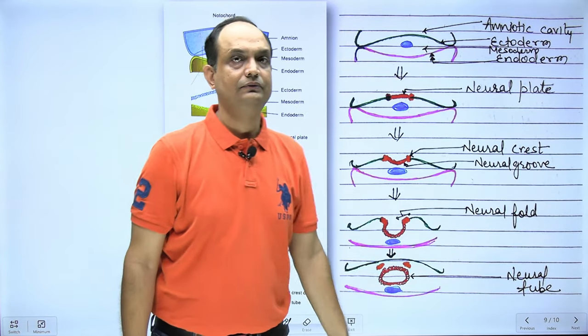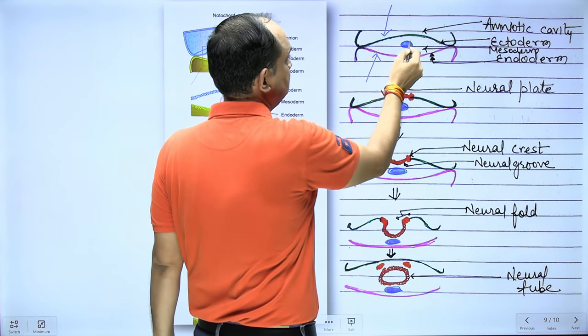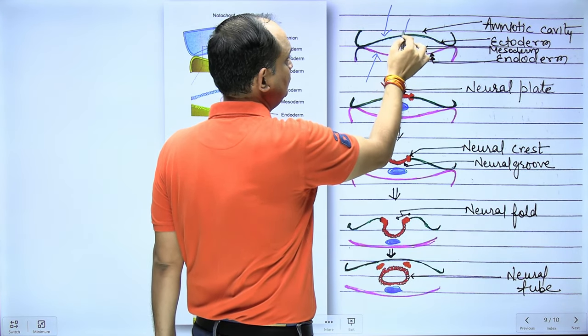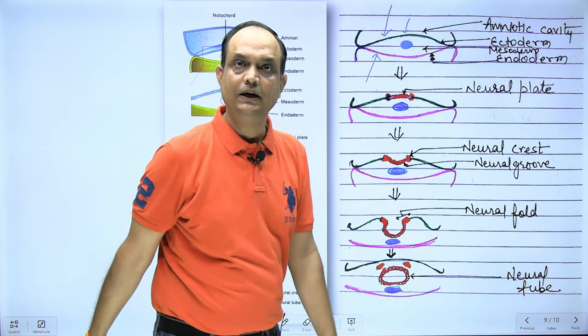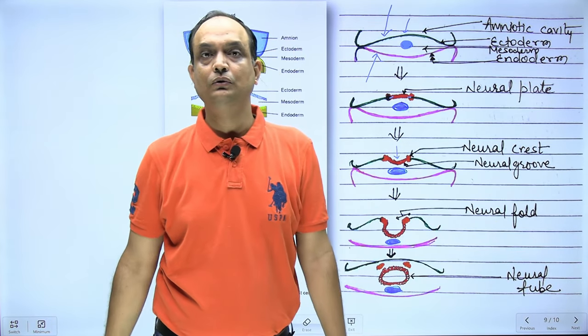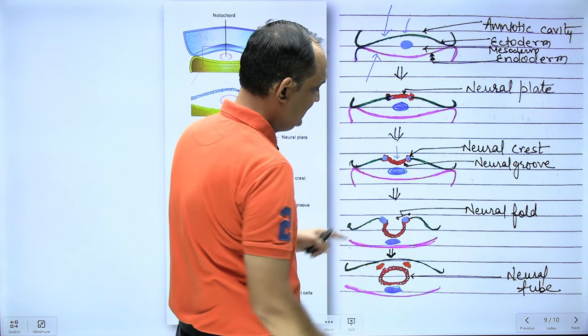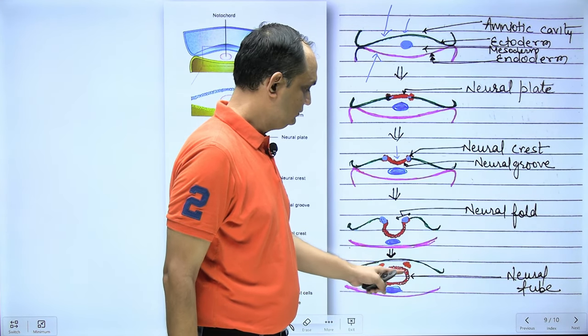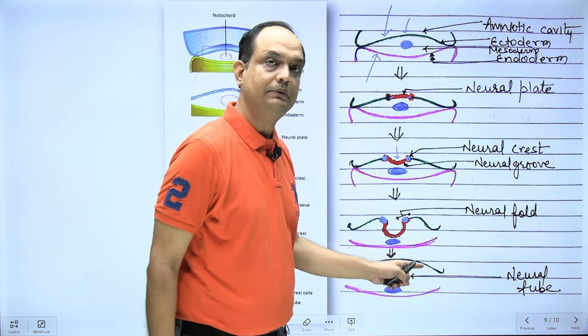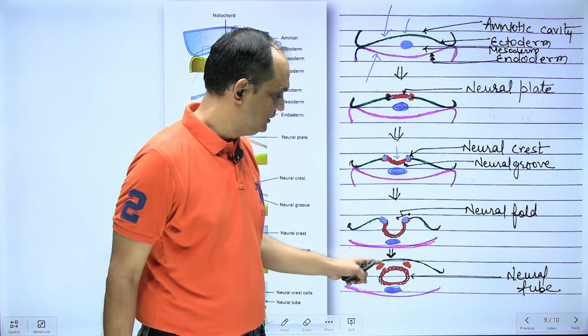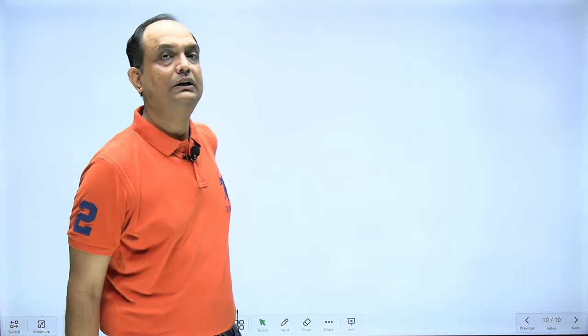To conclude, the diagram shows: ectoderm and endoderm layers, formation of notochord below the ectoderm, the overlying ectoderm changing to form the neural plate, invagination forming the neural groove with folds, neural crest cells on the fold tips, and finally fusion of the folds forming the neural tube. The surface ectoderm becomes continuous, and between the overlying ectoderm and the underlying neural tube lies the neural crest cell mass. You should now understand the definition, neural plate, groove, folds, neural crest cell formation, the future of neurulation, and neural tube defects.